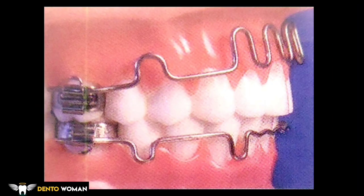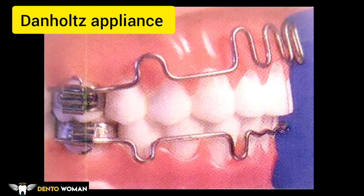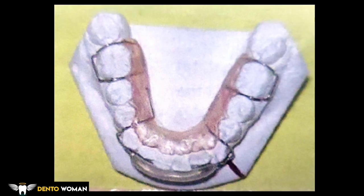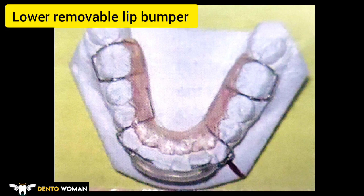Here you can see the Thenholts appliance, which is basically a lip bumper. When it is given in the upper arch it is named as the Thenholts appliance. This is a lower removable lip bumper. Lip bumpers can be of two types: removable or fixed.